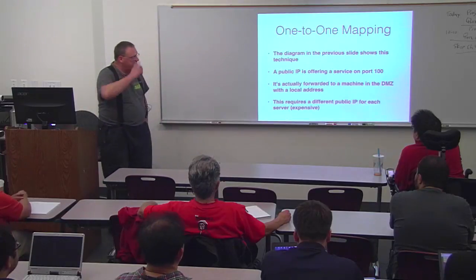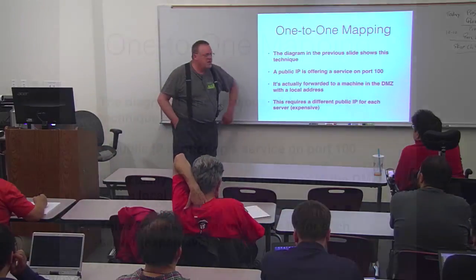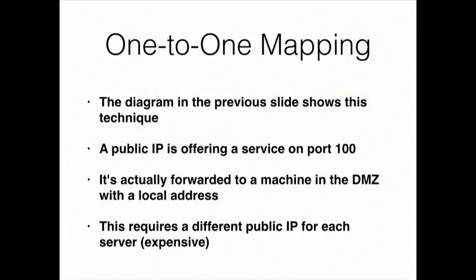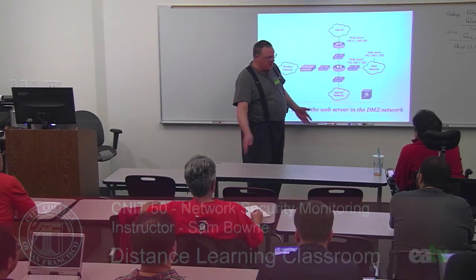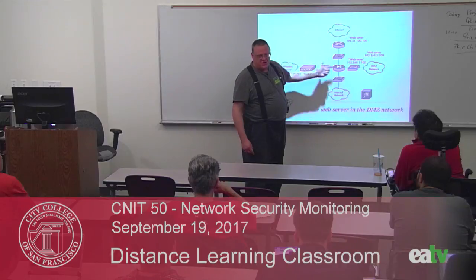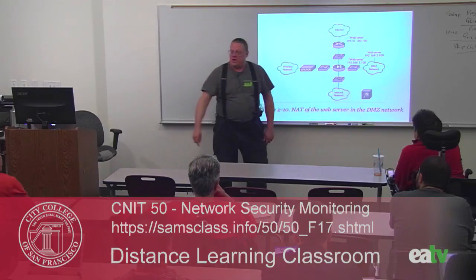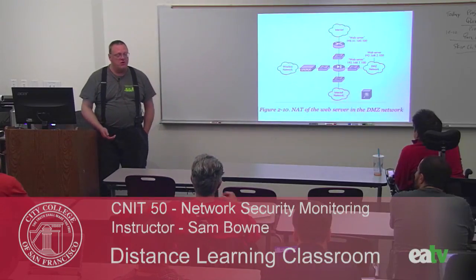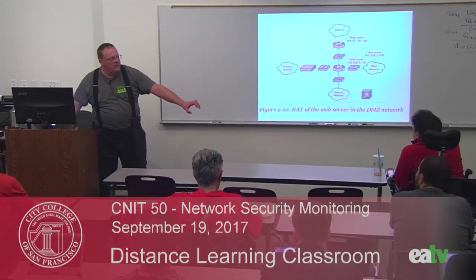This is the one-to-one mapping: you have a public IP offering a service and it's forwarded to a machine in the DMZ with one address. If you have a web server listening on port 80, you can only have one web server at the whole company — it comes to your one public address on port 80 and you tell it which machine is the web server. If somebody else installs a web server and starts listening on port 80, nobody outside can see it. That's the one-to-one mapping: one public port number goes to one private port number.